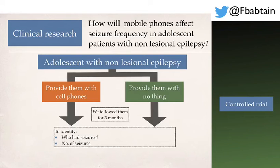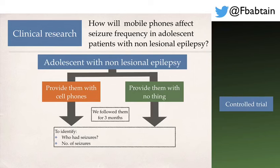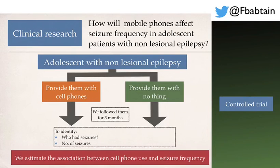The examiners are blinded, but the patient may know their group. Additionally, the statistician analyzing the data is blinded to which group was exposed to cell phones — so this is a controlled trial that can be single-blinded, double-blinded, or triple-blinded. After all, the goal is to estimate the association between cell phone use and seizure frequency.